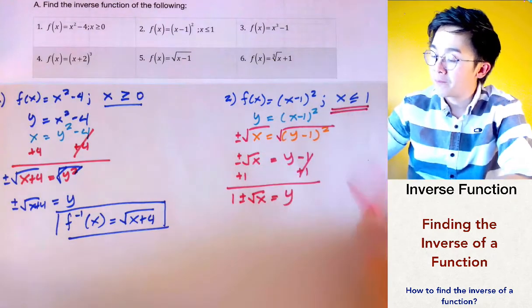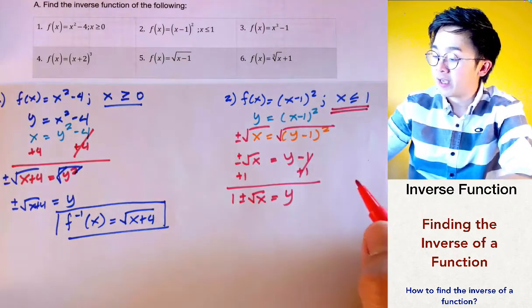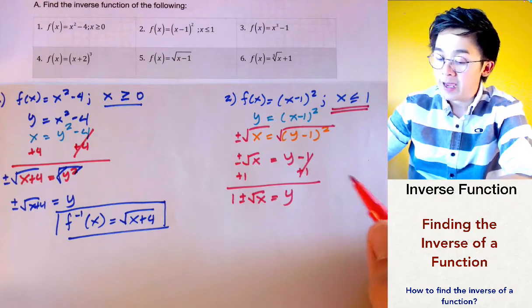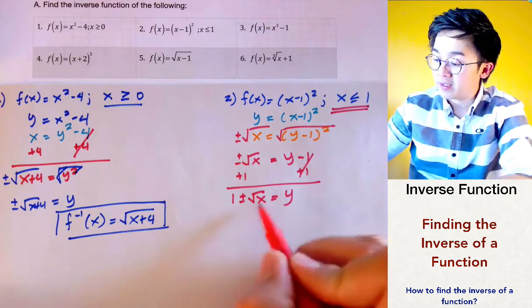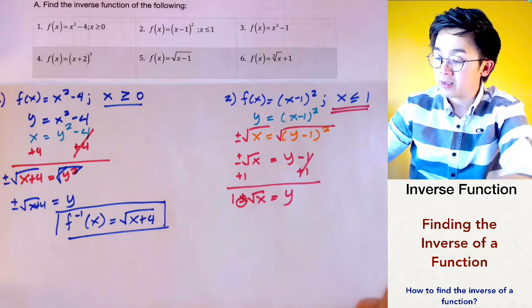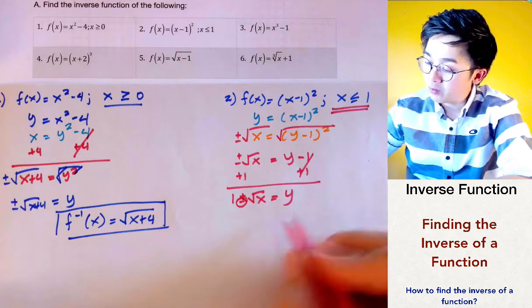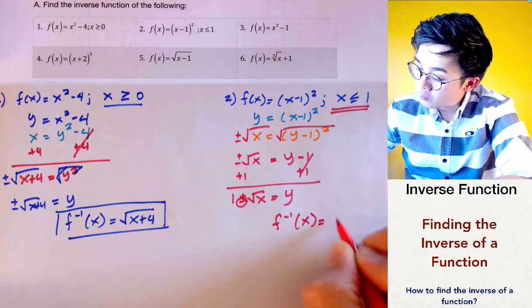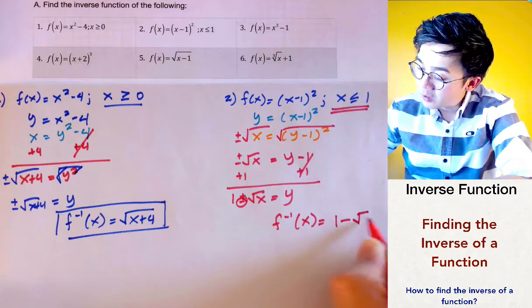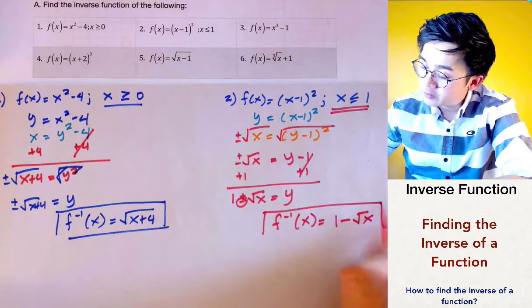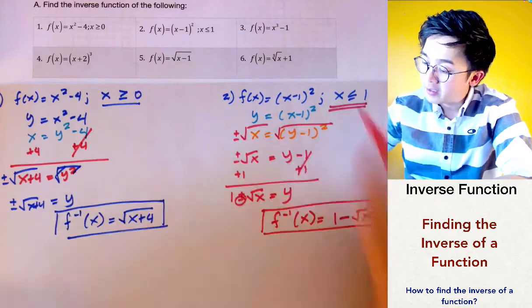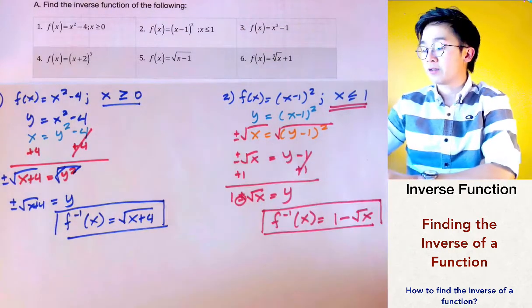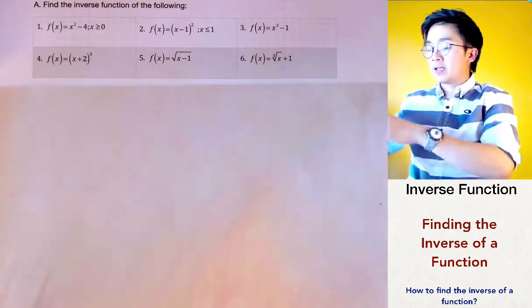The restriction is that the domain should be all values less than or equal to 1. So we take the negative side, giving us f⁻¹(x) = 1 - √x, which satisfies the restriction that x is less than or equal to 1.